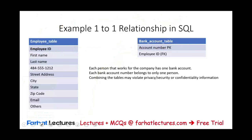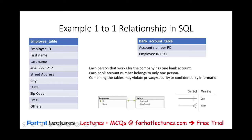What are the symbols or signs for a one-to-one relationship? When we have two tables, we use a key symbol on both sides to denote one-to-one. The notation shows a 'one' symbol on each end, representing a one-to-one relationship between the two tables.